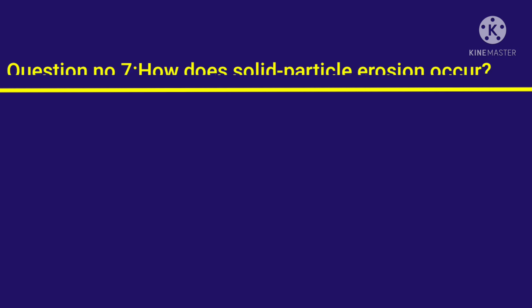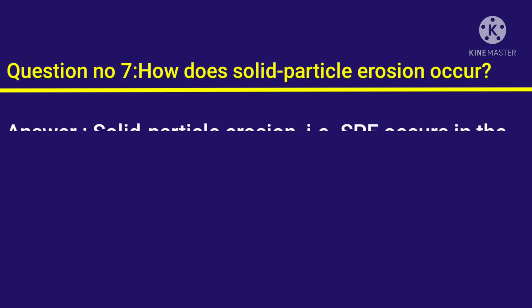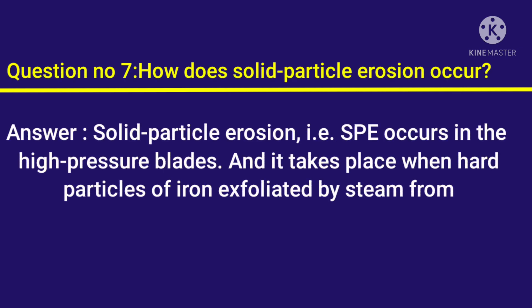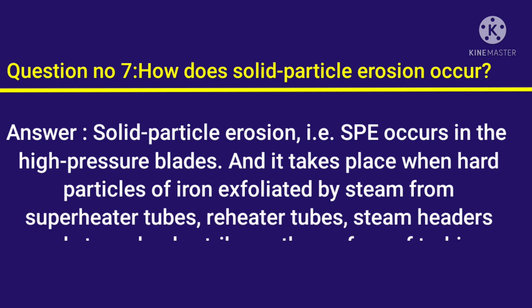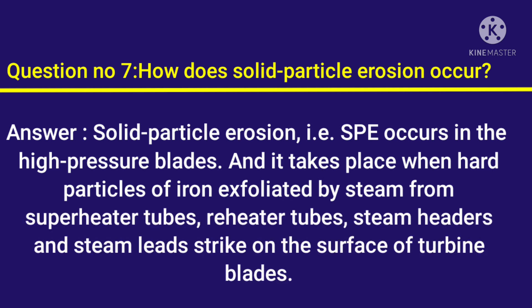Question number 7: How does solid particle erosion occur? Answer: Solid particle erosion (S.P.E.) occurs in the high-pressure blades. It takes place when hard particles of iron exfoliated by steam from superheater tubes, reheater tubes, steam headers, and steam leads strike the surface of turbine blades.